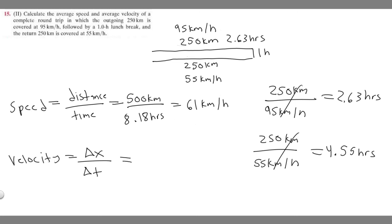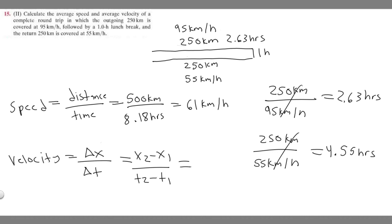Now let's look at velocity, which is a bit different — they're kind of trying to trick you here. We write it as x₂ minus x₁ over t₂ minus t₁. The denominator, t₂ minus t₁, is just the total time, which is the same 8.18 hours.